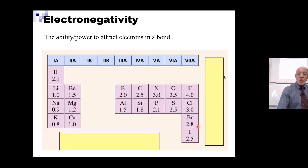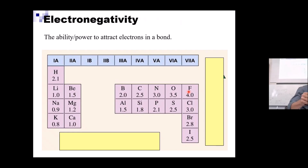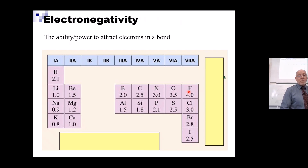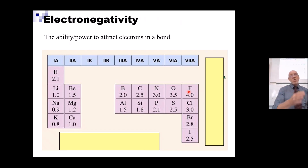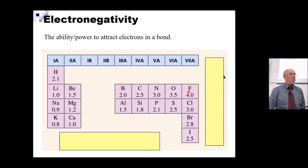Electronegativity increases going up and from left to right, which means the biggest electronegativity is fluorine — 4 on the Pauling scale. You can't get a bigger electronegativity than fluorine. All the trends in the periodic table come from the electronic structure, and the electronic structure determines the properties.